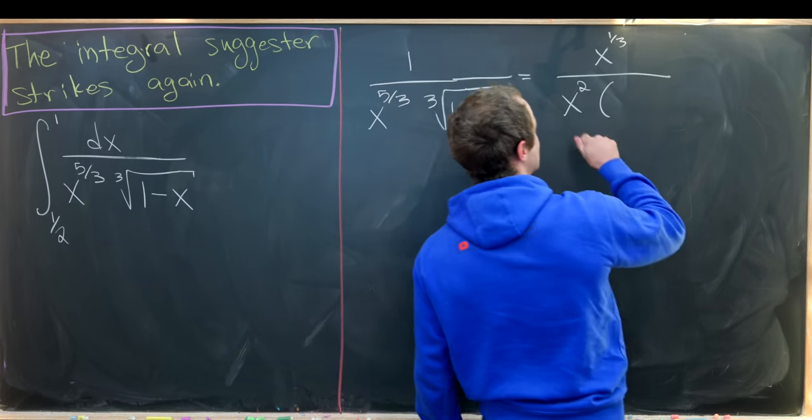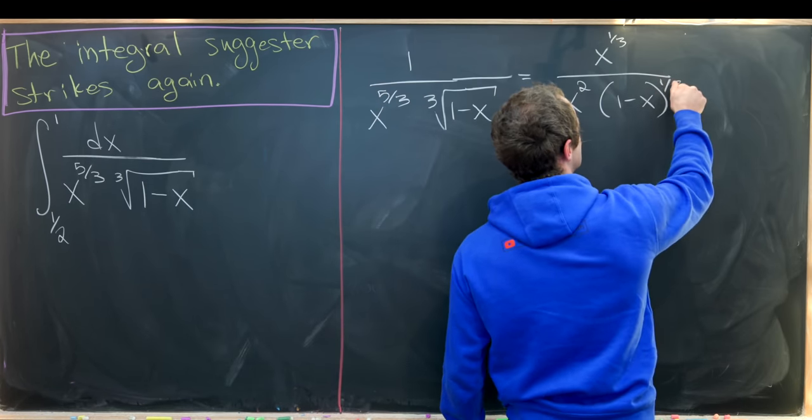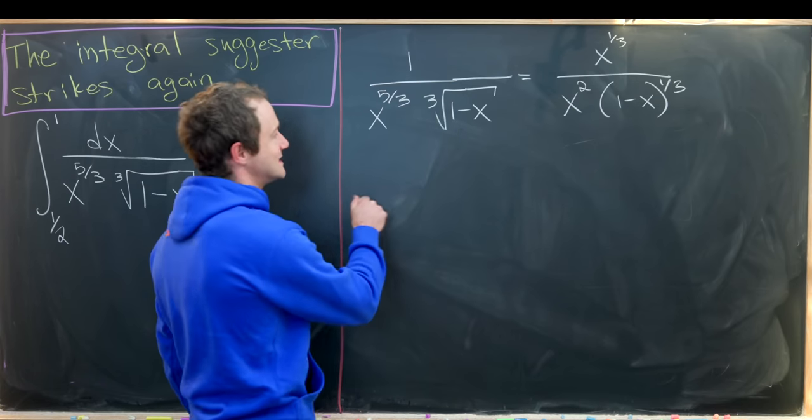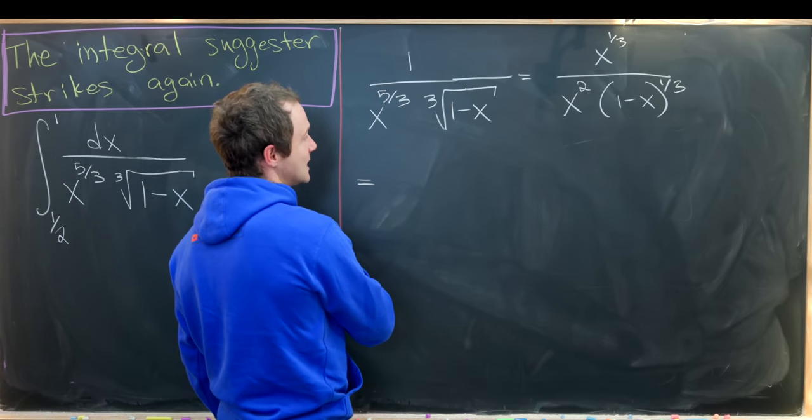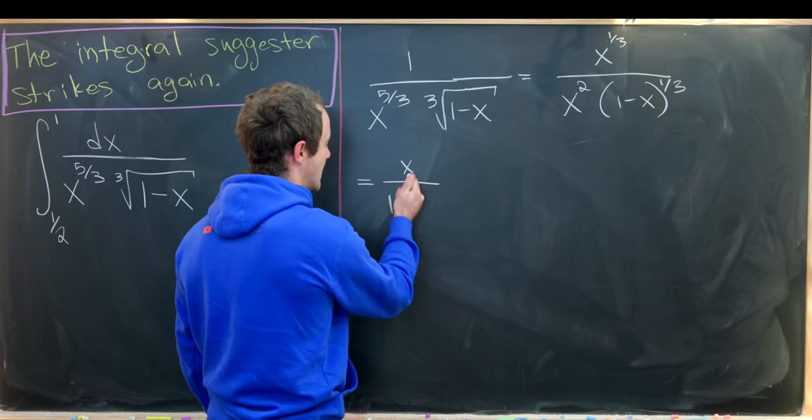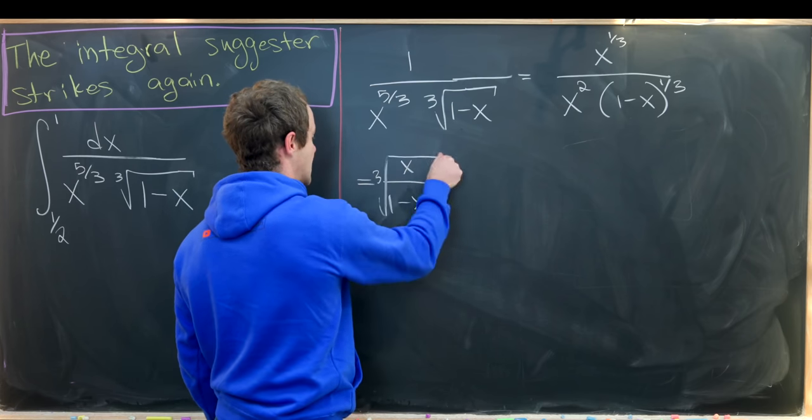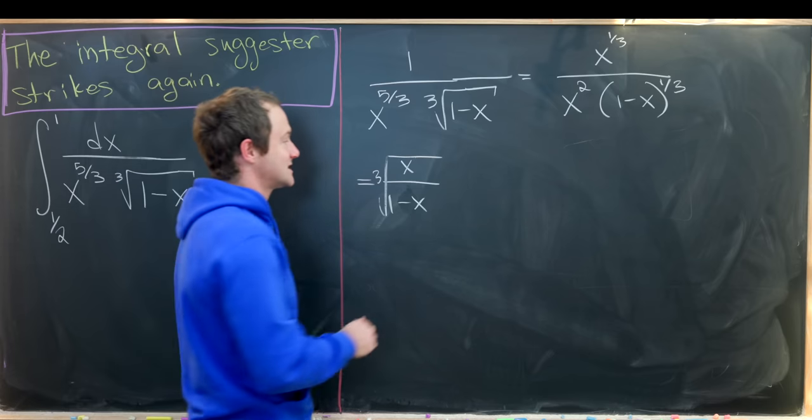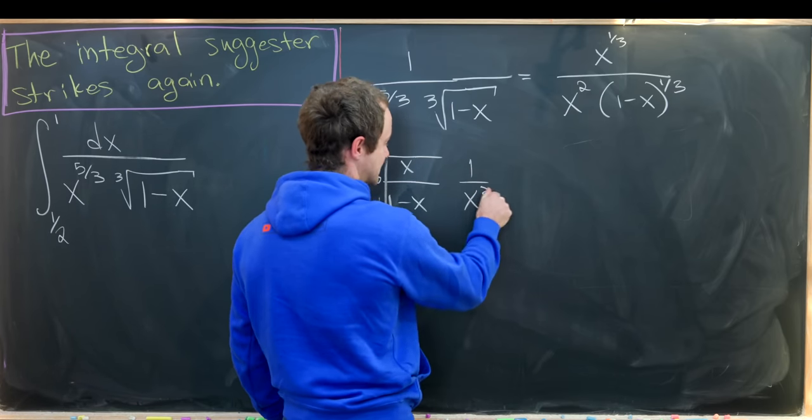Now I can rewrite this as 1 minus x to the 1 third. Now I can take this entire function and rewrite it as x over 1 minus x, all of that within a cube root, times 1 over x squared.